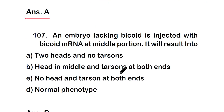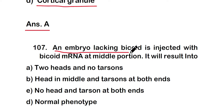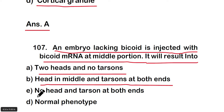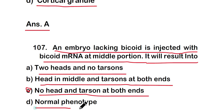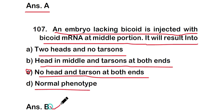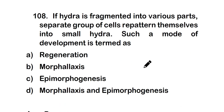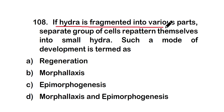Question 107: An embryo lacking bicoid is injected with bicoid mRNA at the middle portion. It will result in: (a) two heads and no telsons, (b) head in middle and telsons at both ends, (c) no head and telsons at both ends, or (d) normal phenotype. The correct answer is option B — head in the middle and telsons at both ends.